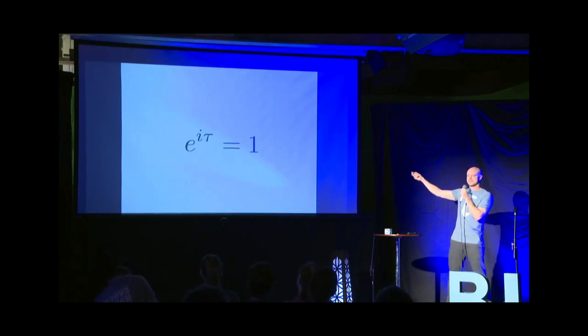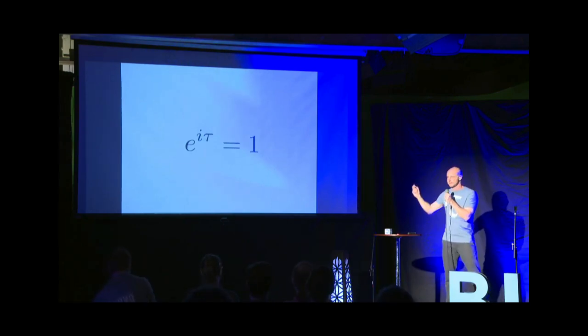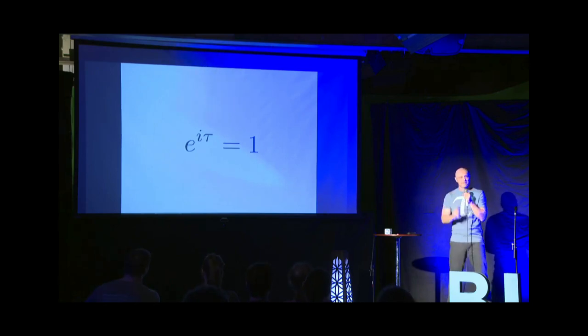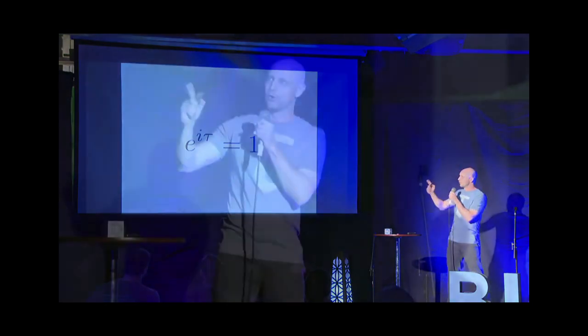So I submit that this should be known as Euler's identity. This is the most natural statement of Euler's identity. But you'd be amazed at how many people complain that this only relates four numbers. So I'd like to note for the record that e to the i tau equals 1 plus 0. So this actually does relate the five most important numbers in mathematics, 0, 1, i, e, and tau.